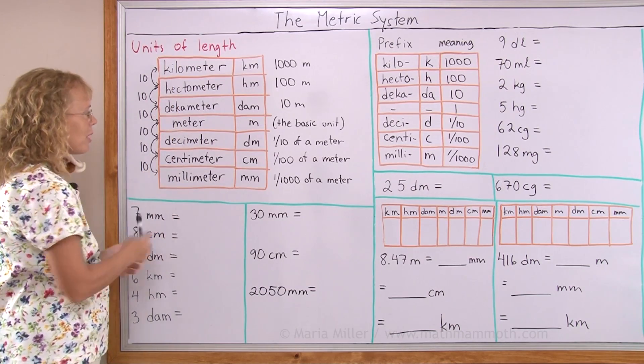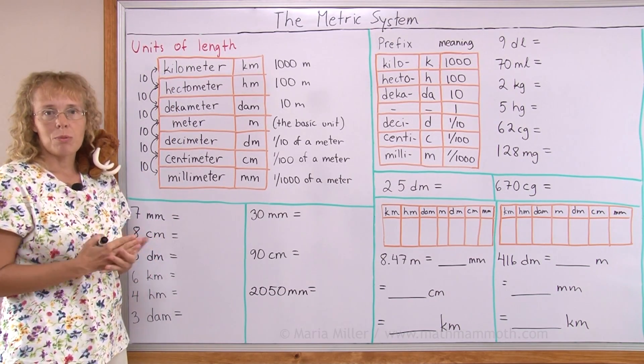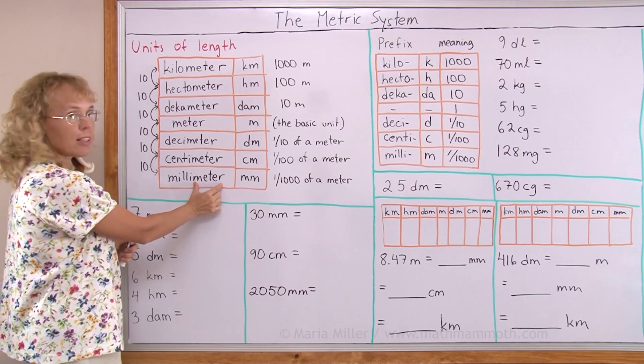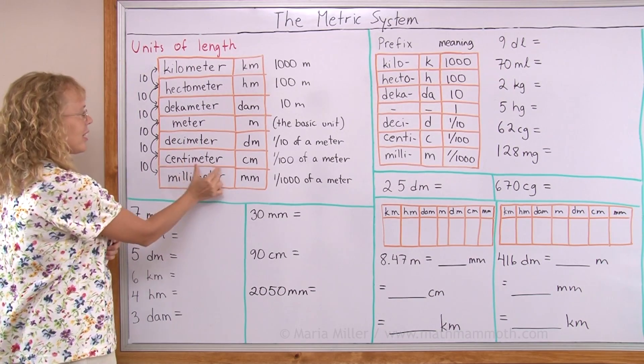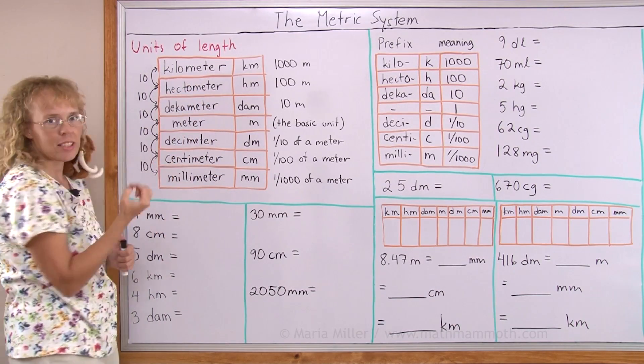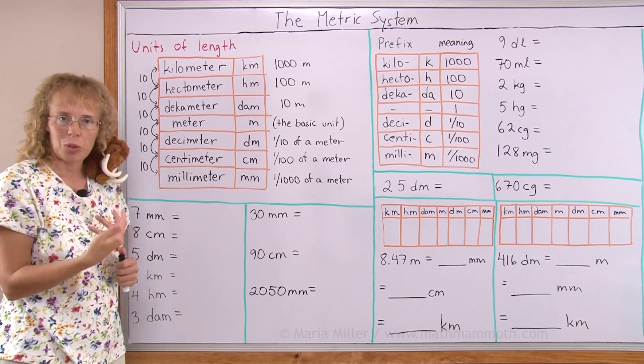And the same kind of table would be done for any kind of metric unit, such as for volume, we would use liters, so we would just replace the word meter here with liter: milliliter, centiliter, deciliter, liter, decaliter, hectoliter, kiloliter, or gram: milligram, centigram, and so on.